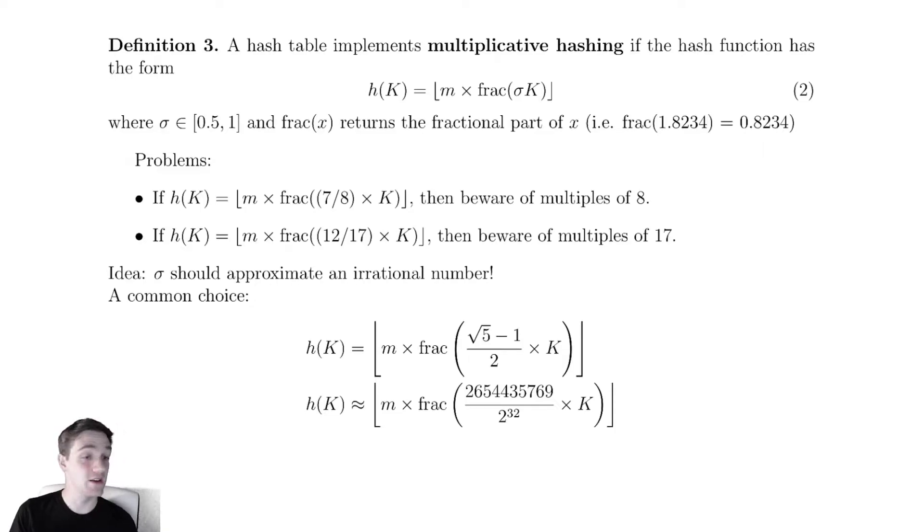So this will guarantee to give us a number when we compute frack between 0 and 1. And it will, when we run that down, it will therefore definitely be between 0 and m minus 1. So this looks like it's relatively smart. We choose this value sigma to be between 0.5 and 1. That has some nice properties for us. We're not really going to get into those. Let's discuss some problems that happen.